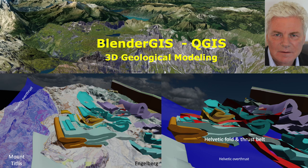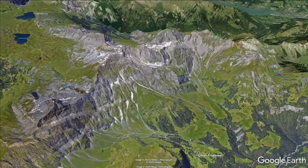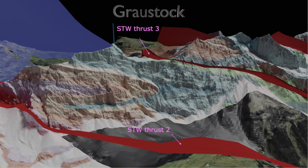In this video, a method is presented to construct and display complex geological structure in three dimensions using open source GIS applications. The study area is the Helvetic Fold and Thrust Belt in front of Mount Titlis in Switzerland, where excellent outcrops reveal the structures. They are imaged with aerial photography, digital elevation model, LiDAR, all in stunning high resolution.